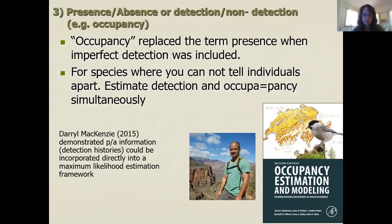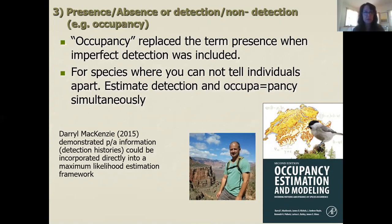The real strength of camera trapping is using presence-absence data — now called detection/non-detection data — for occupancy modeling. Occupancy essentially means what sites are occupied across your landscape, but the term now refers to analysis that corrects for imperfect detection. Rather than just counting sites with animals, corrected occupancy tells us the true distribution of animals across the landscape.